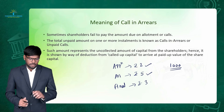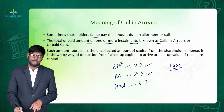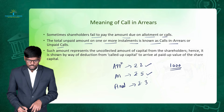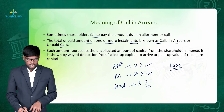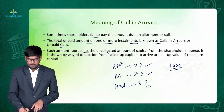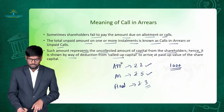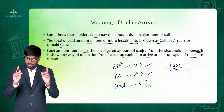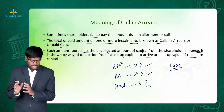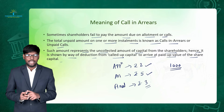Sometimes shareholders fail to pay the amount due on allotment or calls. The total unpaid amount on one or more installments is known as call in arrears or unpaid calls. In my example, if Prakash failed to pay the rupees 3 money at the time of final call, that is call in arrears. Such an amount represents the uncollected amount of capital from the shareholders. Hence, it is shown by way of deduction from called-up capital to arrive at the paid-up value of share capital. To arrive at paid-up capital for the balance sheet, we subtract the call in arrears amount from the called-up capital.